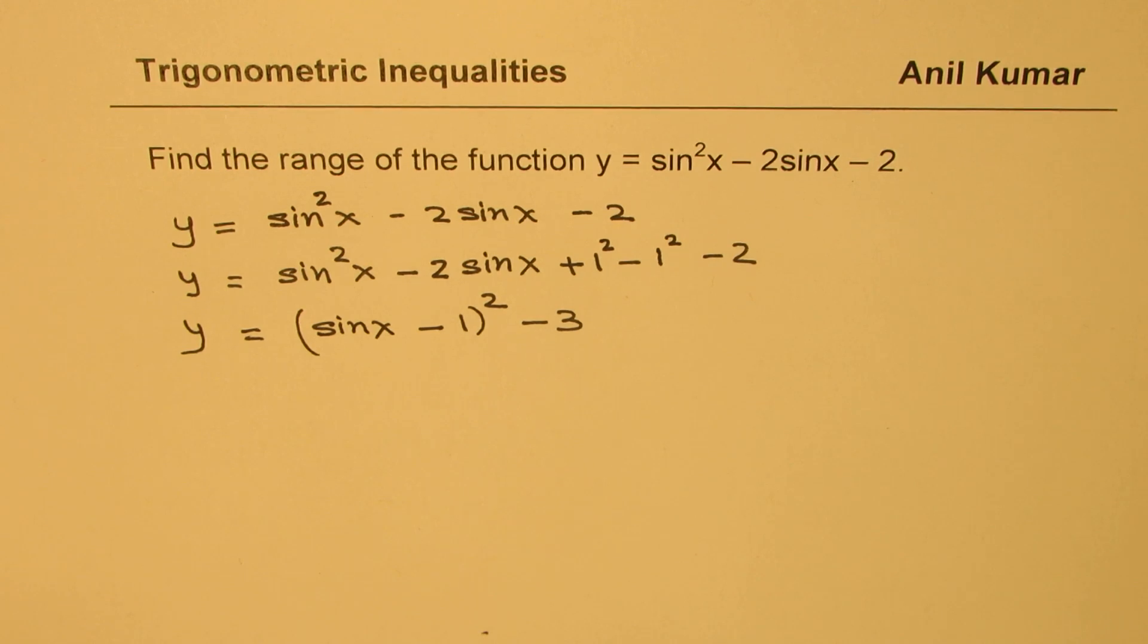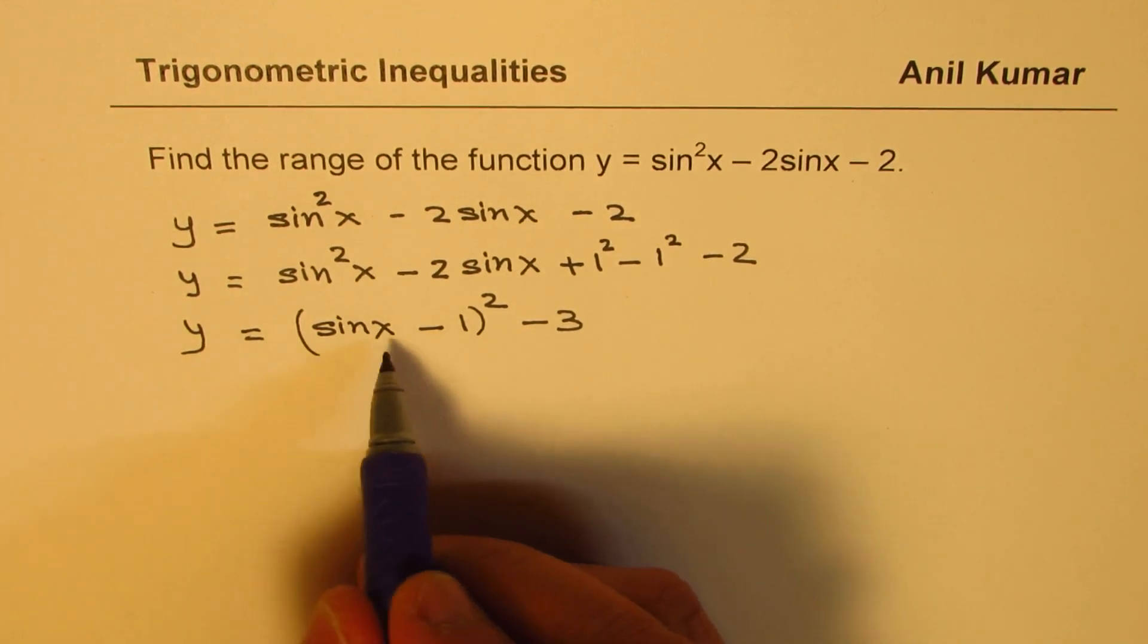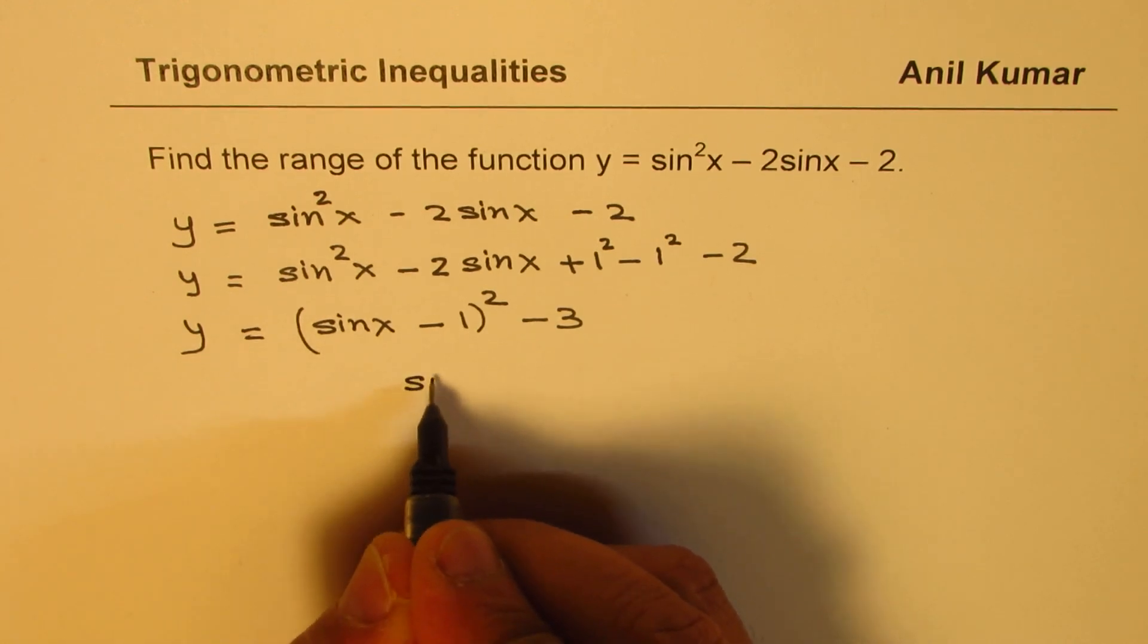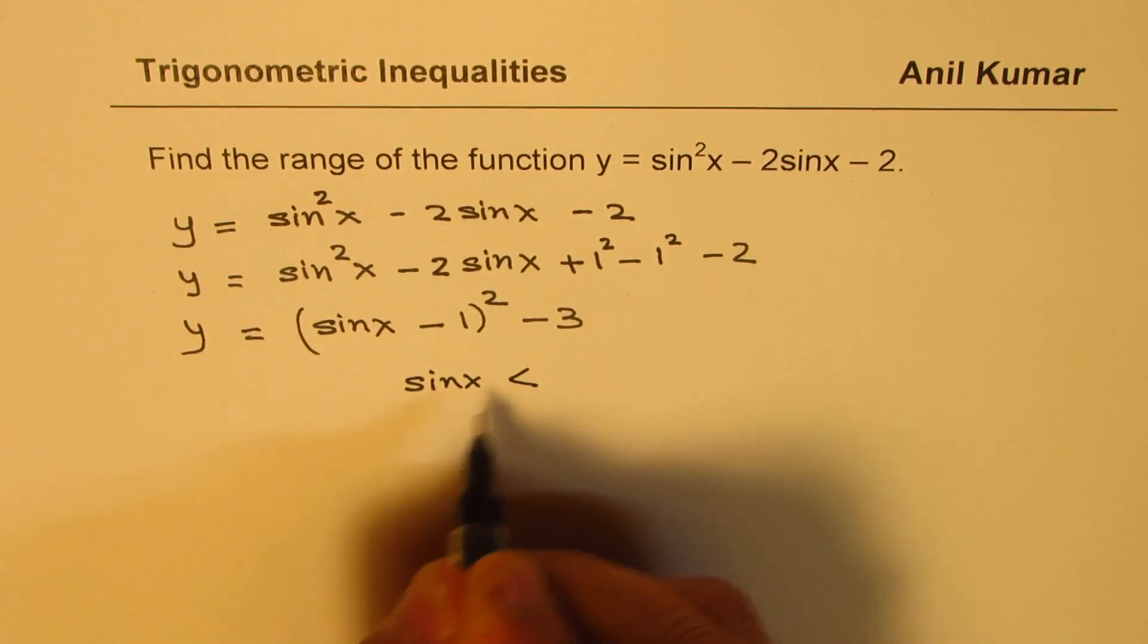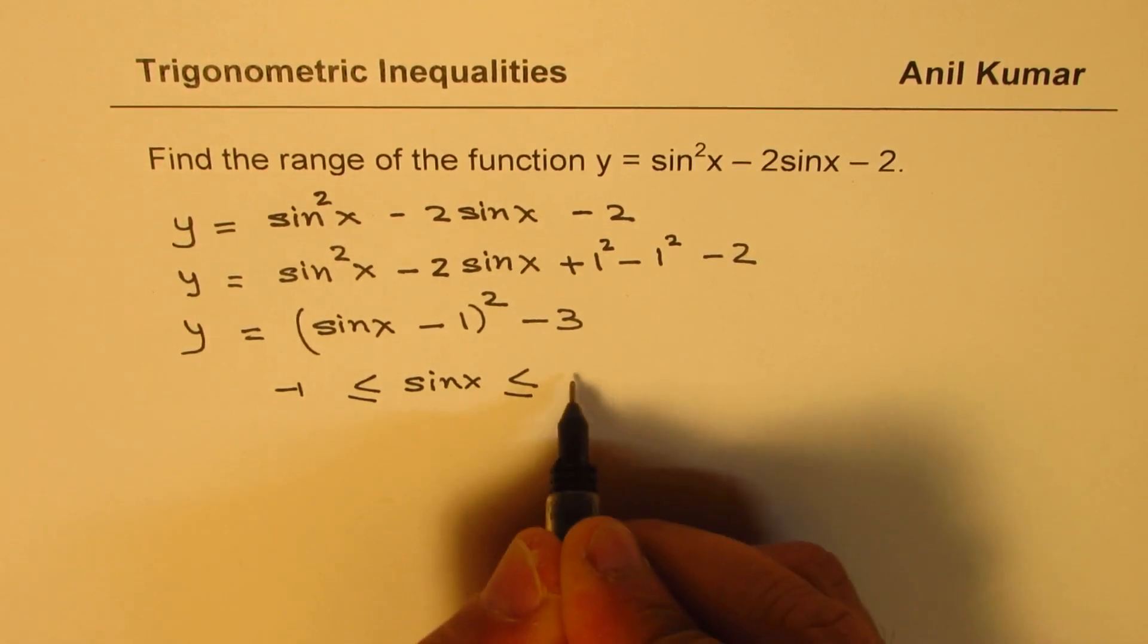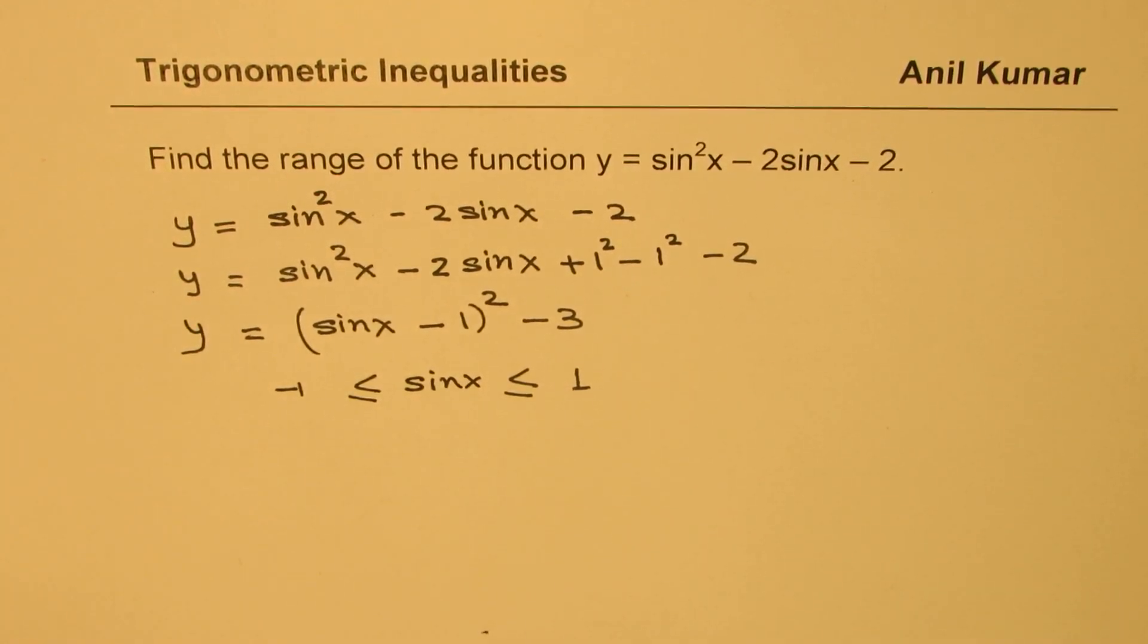Now from here we can actually find maximum and minimum values. Let us see how. To approach, we will see what is the value which sine x can take. And from there we will actually get our solution. So from here we know the value of sine x basically is in between minus 1 and plus 1. That is what sine x can have.